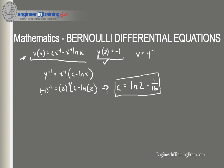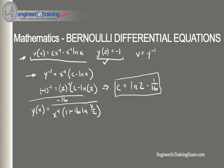Now we plug c back into our equation and solve for y alone to get our particular solution. After simplification, y(x) equals negative 16 divided by x to the 4th times (1 plus 16 natural log of x divided by 2). That is our solution to this Bernoulli equation.